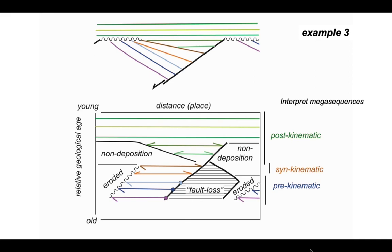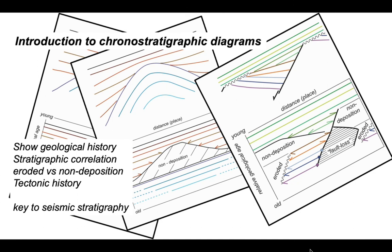Although the structure itself is fairly straightforward, the chronostratigraphic representation and the geological history you can derive from it are actually fairly complicated, making the chronostrat diagram a critical tool. In summary: chronostrat diagrams show the geological history, demonstrate how different stratigraphic sections can be correlated, allow us to explore the relationship between eroded and non-deposited parts of successions, and enable us to deduce the tectonic history. While we've used simple cartoon cross-sections here, chronostrat diagrams are fundamental to displaying understanding of seismic stratigraphy when examining seismic profiles.